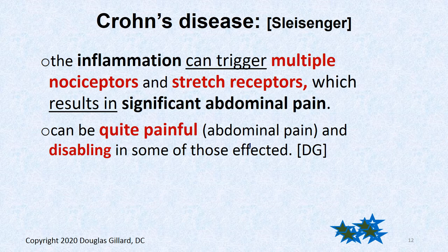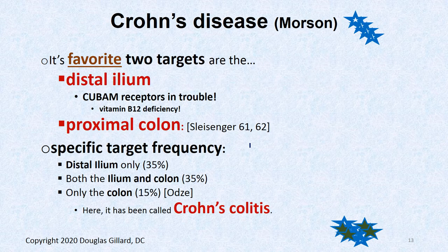Crohn's disease causes pain because inflammation causes swelling and fluid, which stretches tissue and stimulates stretch receptors. It can also lead to scarring, which can cause small bowel or colon obstruction — we've covered the sequelae of obstruction extensively.